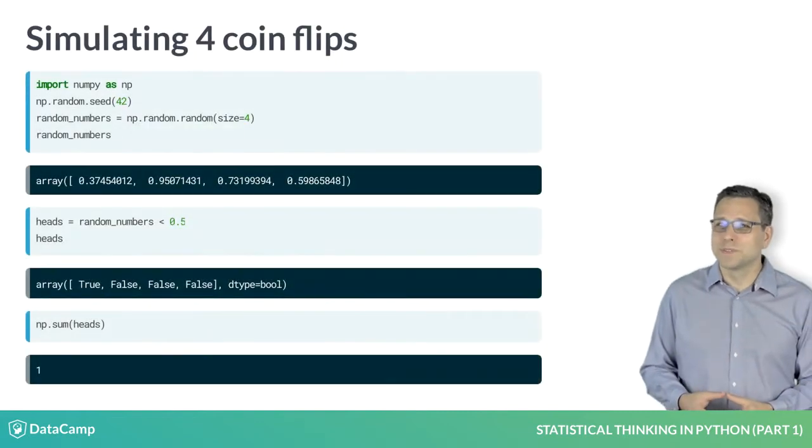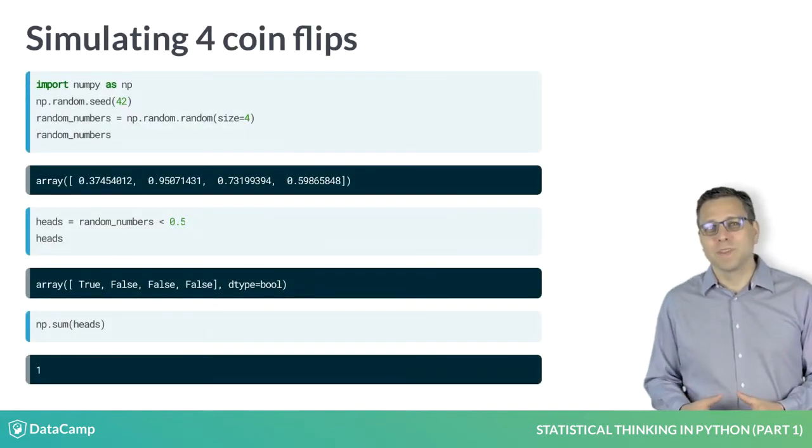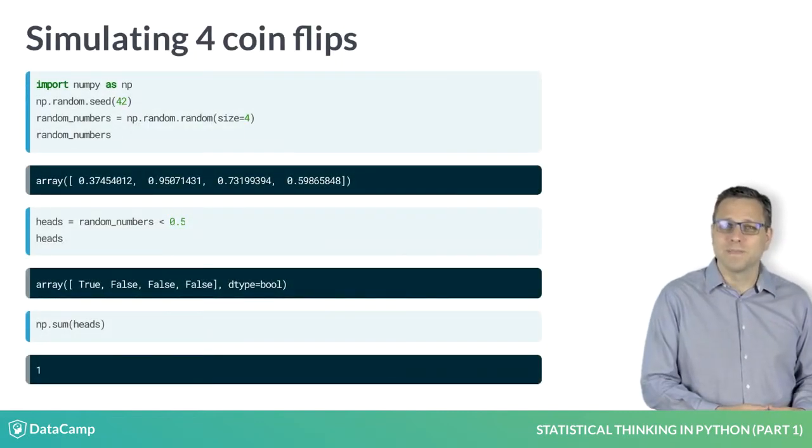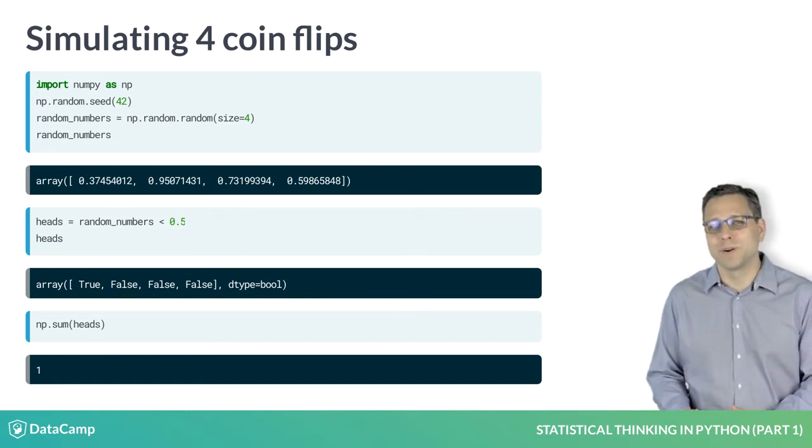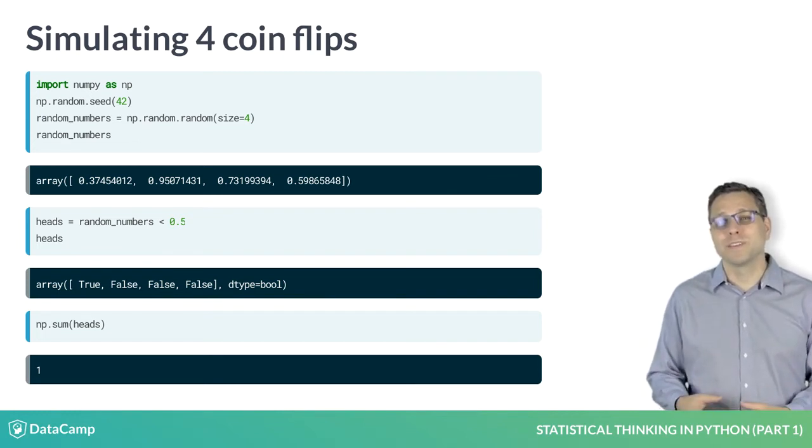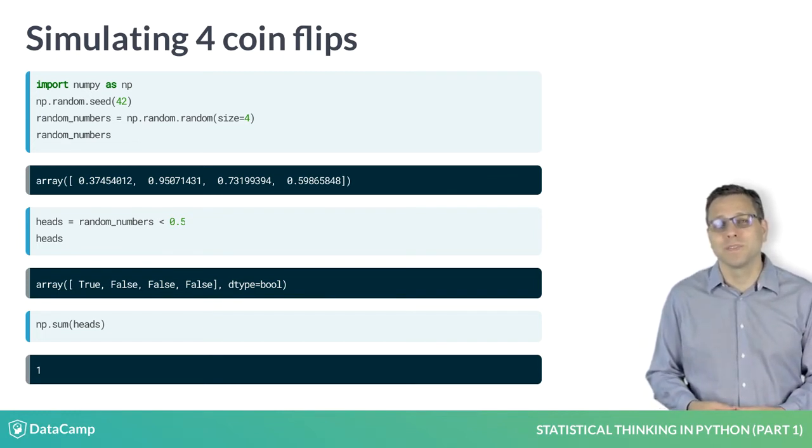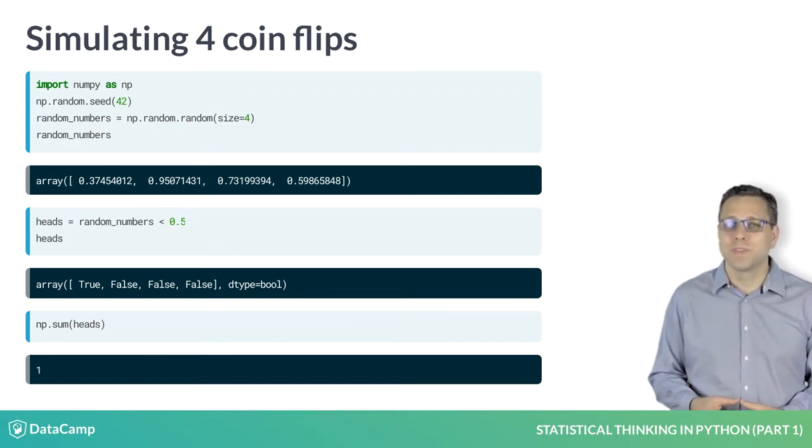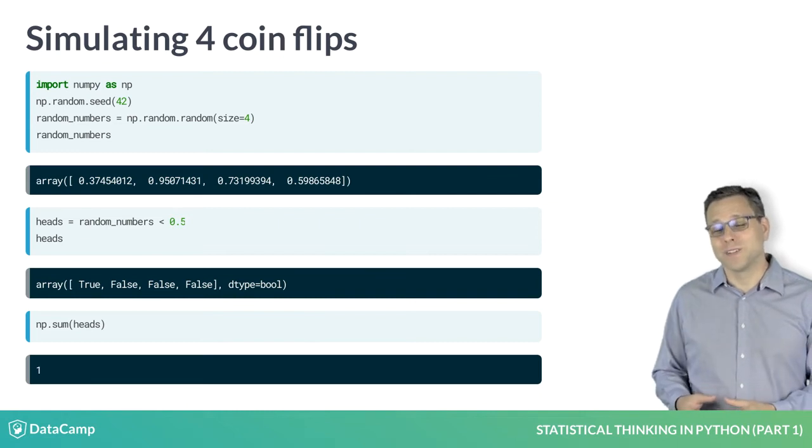Now to do our coin flips, we import NumPy, seed the random number generator, and then draw four random numbers. Conveniently, we can specify how many random numbers we want with the size keyword argument. The first number we get is less than one half, so it is a heads, but the remaining three are all tails.